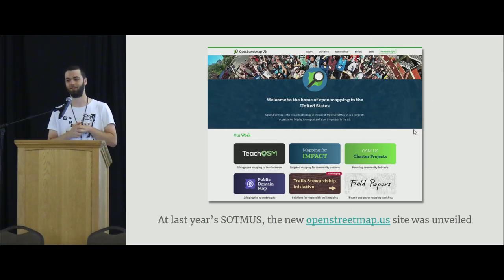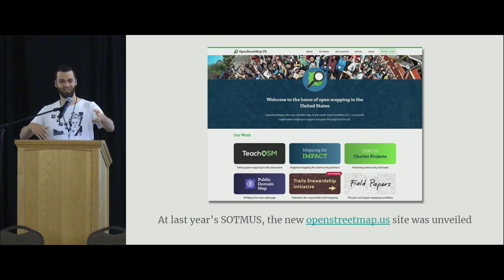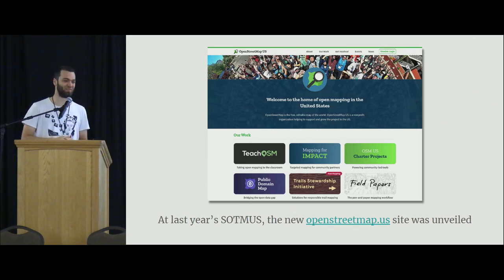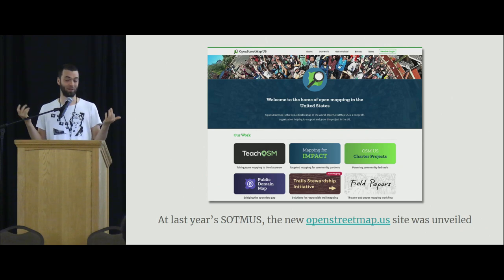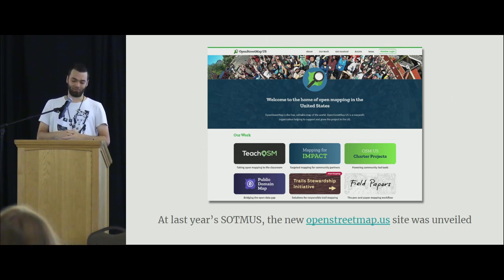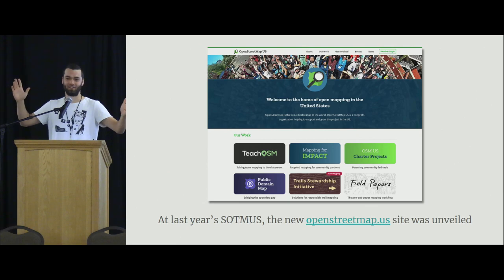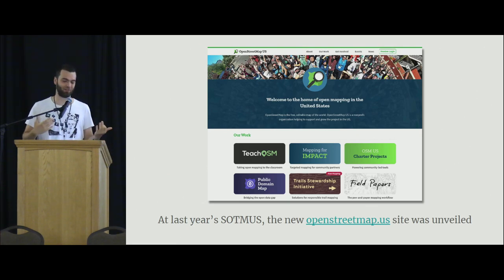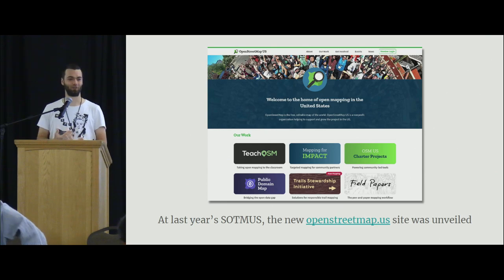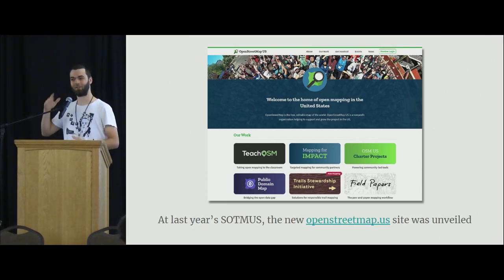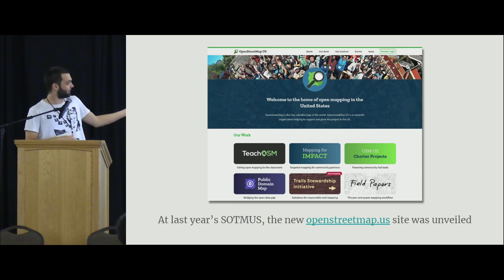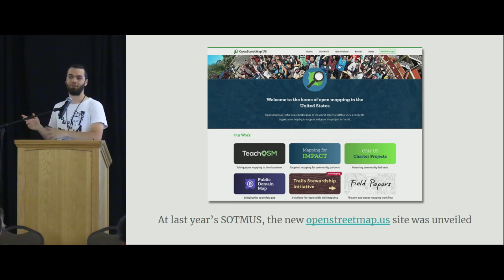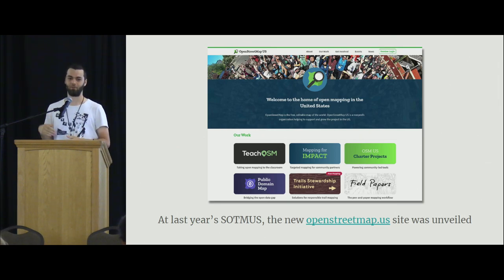So last year at the State of the Map US in Richmond — Quincy is actually here right now, and I feel like I've been surrounded by all of my celebrities this weekend as an OSM enthusiast — Quincy announced that there is going to be this new website for the OpenStreetMap US community. Seeing it on the screen, I was super excited about it. When I went to visit it, it was everything I would look for in a community website. It's got this really nice banner on the front, and you can see these different themed links to all the big projects that OpenStreetMap US works on. There's a lot of really cool metadata that you can drill down into about the contributors to these projects and all sorts of different things.